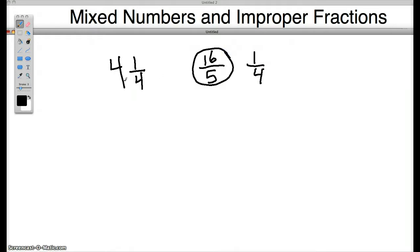So how do I change this mixed number into an improper fraction? I simply multiply the denominator times the whole number coming around in this direction. And then I add the numerator to get my numerator and I keep the denominator the same.